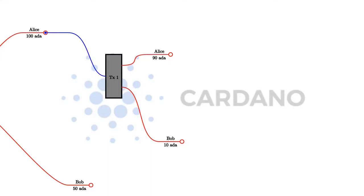Note that in a transaction, the sum of the input values must equal the sum of the output values. So in this case, 100 ADA go in and 10 plus 90 ADA go out. Strictly speaking, that's not entirely true — there are two exceptions. The first exception is transaction fees. On the real blockchain, for each transaction you have to pay fees, so the sum of input values has to be slightly higher than the sum of output values to accommodate for the fees.